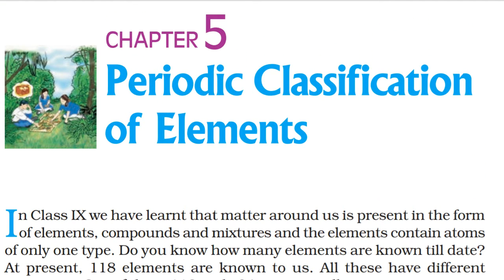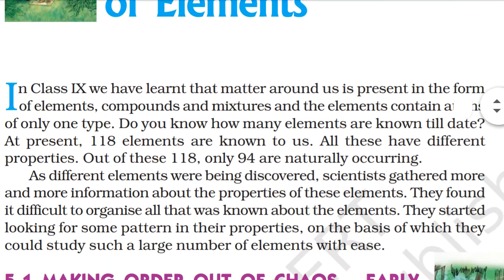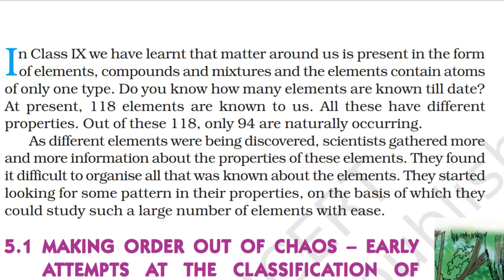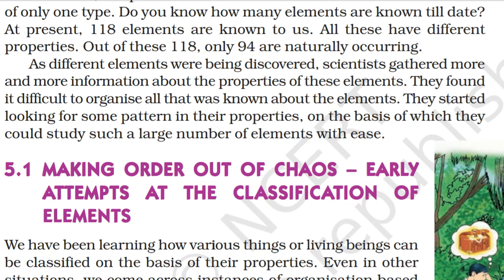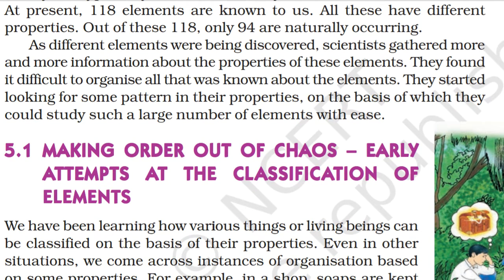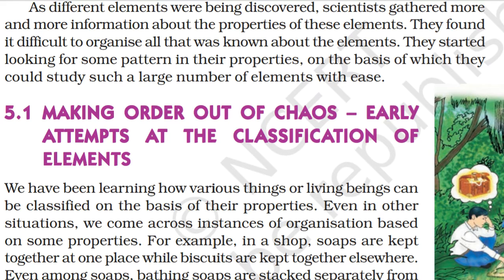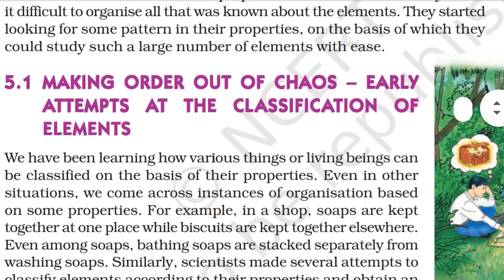Hello everyone, my name is Anushka Saxena and in this video we shall be reading Chapter 5 of Science: Periodic Classification of Elements. In Class 9th we have learned that matter around us is present in the form of elements, compounds and mixtures, and the elements contain atoms of only one type. At present, 118 elements are known to us, all with different properties. As different elements were being discovered, scientists found it difficult to organize all that was known, and started looking for some pattern in their properties.